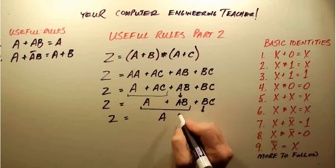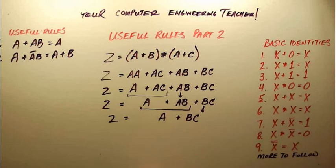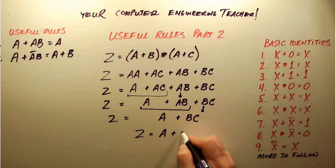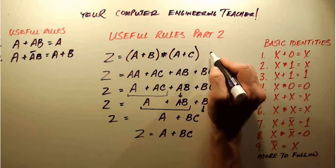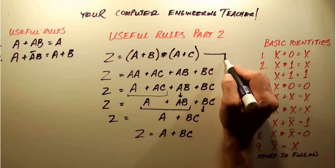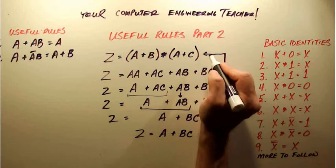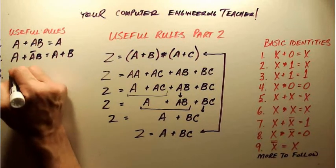This is just going to come down here as plus BC. So what have we determined? That this all reduces down to A plus BC. So anytime I see this here, then I know it's equivalent to this here, and I'm going to write that down as useful rule number three.